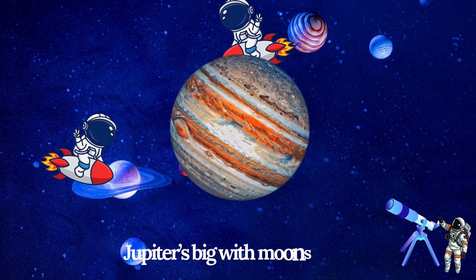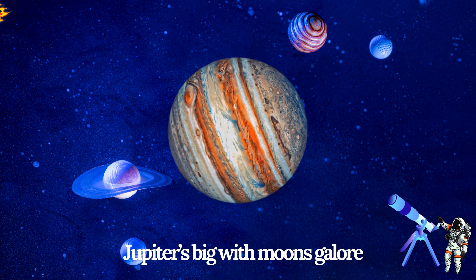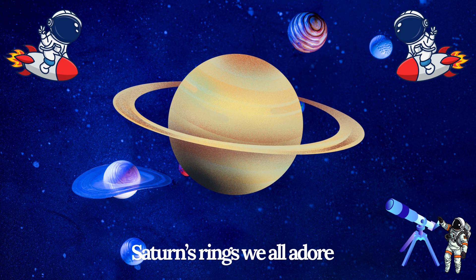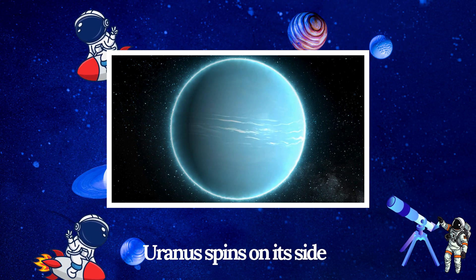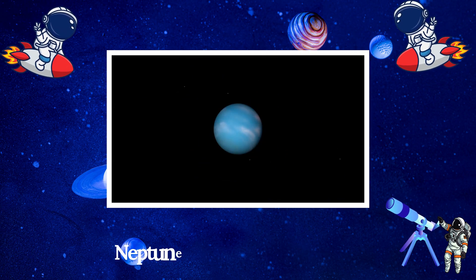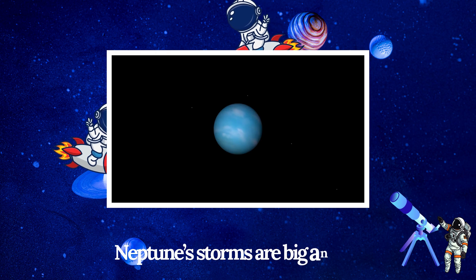Jupiter's big with moons galore, Saturn's rings we all adore. Uranus spins on its side, Neptune's storms are big and wide.